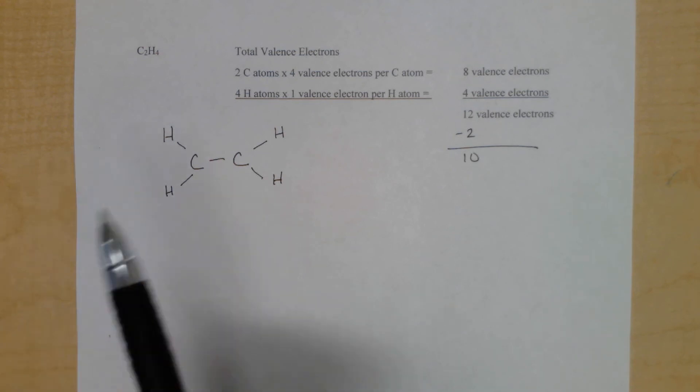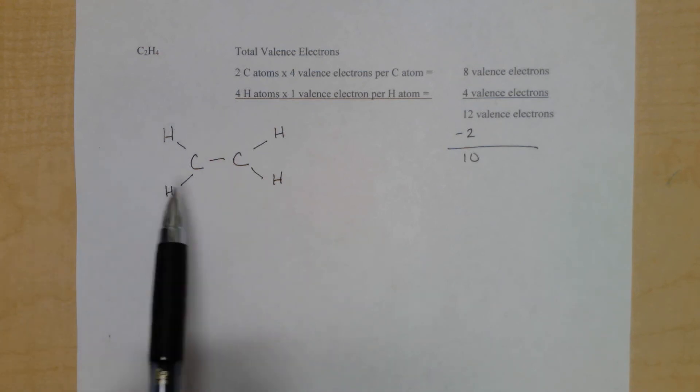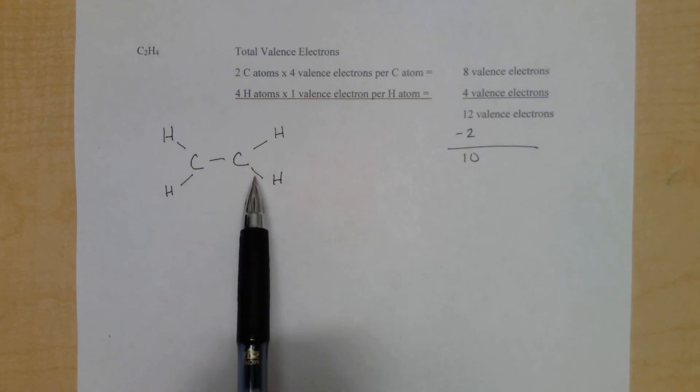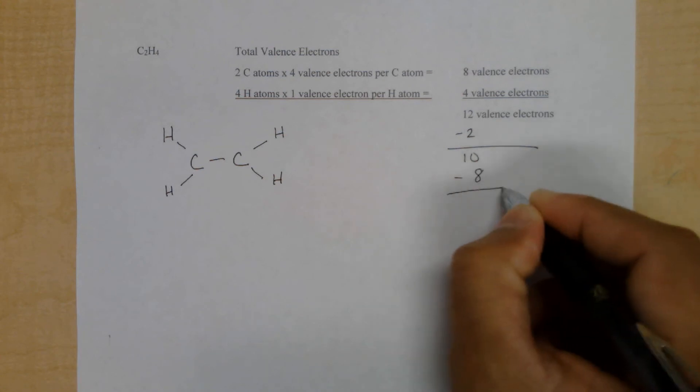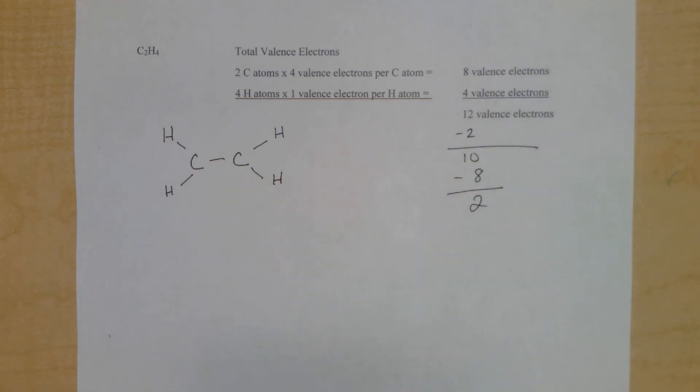Checking our valence electrons, we can count 2, 4, 6, 8 valence electrons used. This means there are 2 valence electrons remaining.